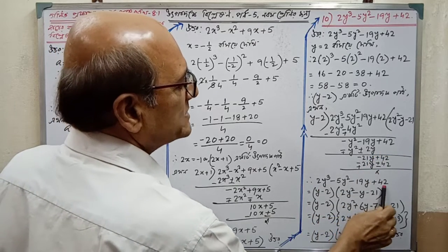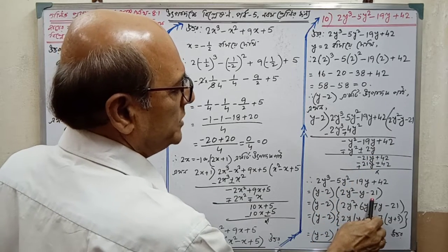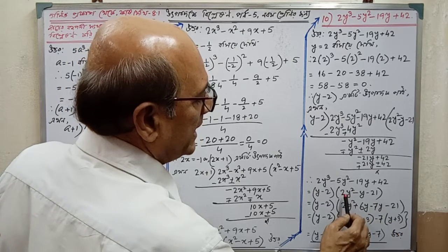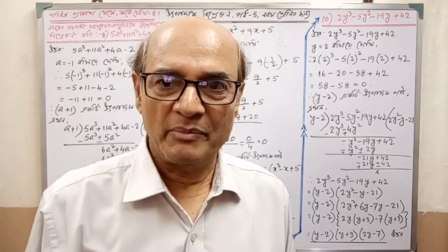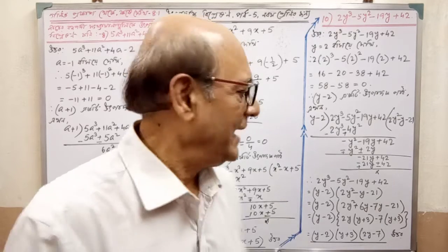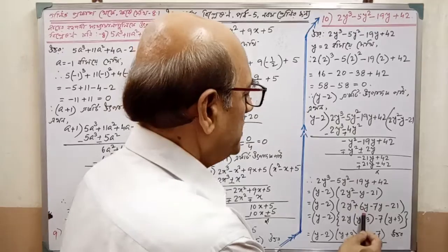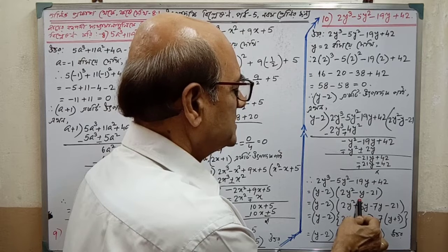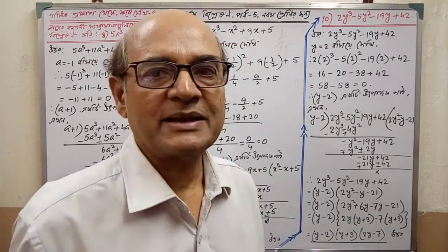We have the expression as y minus 2 into 2y² minus y minus 21. Now we factorize the middle term: 2 multiplied by 21 equals 42. We split minus y as 6y minus 7y, since 6 and 7 multiply to 42, giving us the middle term factorization.